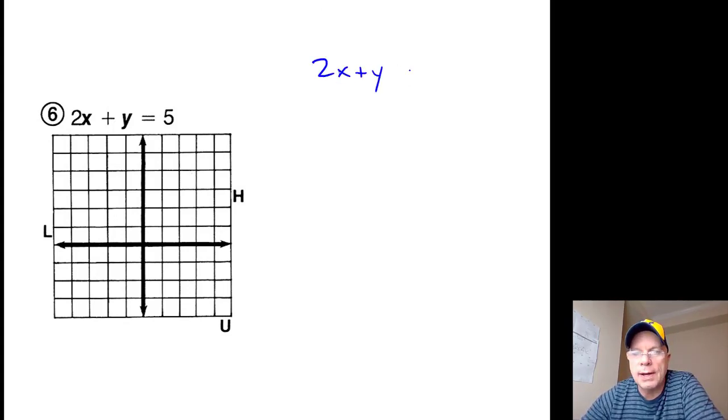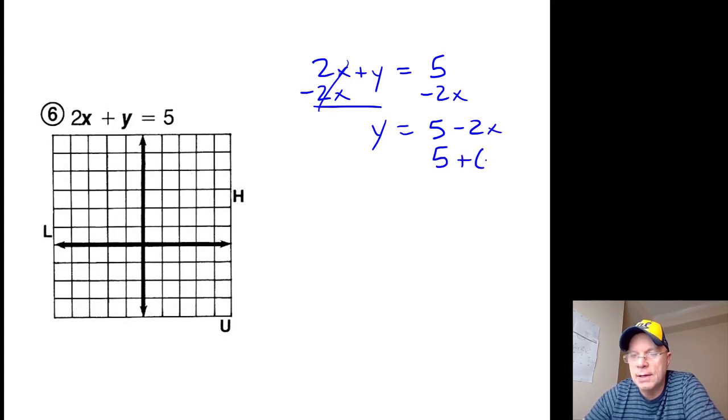2x plus y equals 5. Get the x off this side of the equation using the property of equality, and I'm left with y equals 5 minus 2x, which is the same as 5 plus negative 2x, which is the same as negative 2x plus 5.